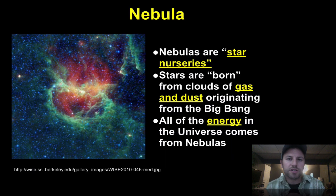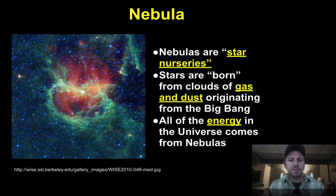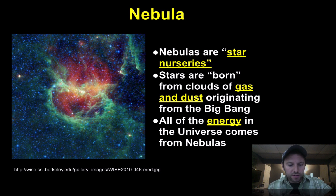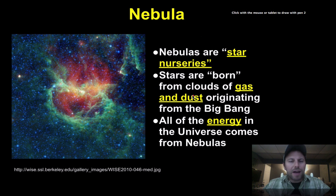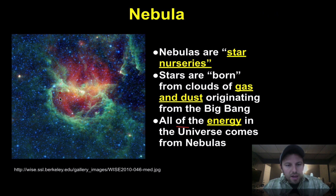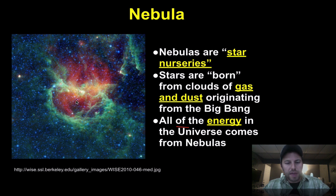Stars start off as nebulae. These are star nurseries — this is where matter starts coming together, coalescing under gravity to start the whole process of star formation. Stars are born from clouds of gas and dust originating from the Big Bang. All the energy in the universe comes from nebulae, because as these coalesce together under gravity, nuclear fusion begins and energy is produced through nuclear fusion.